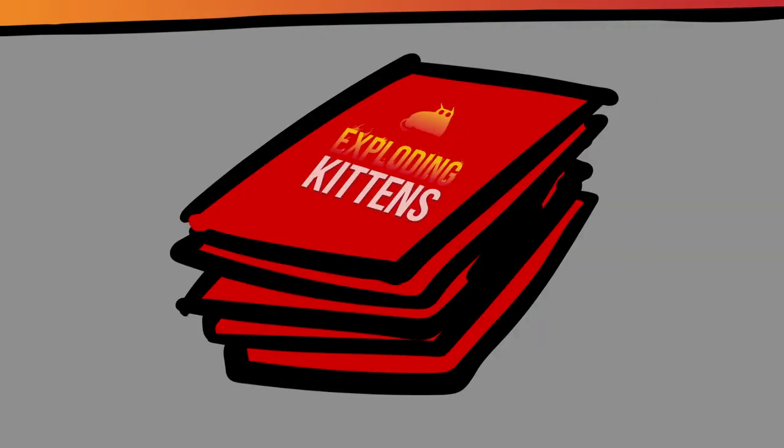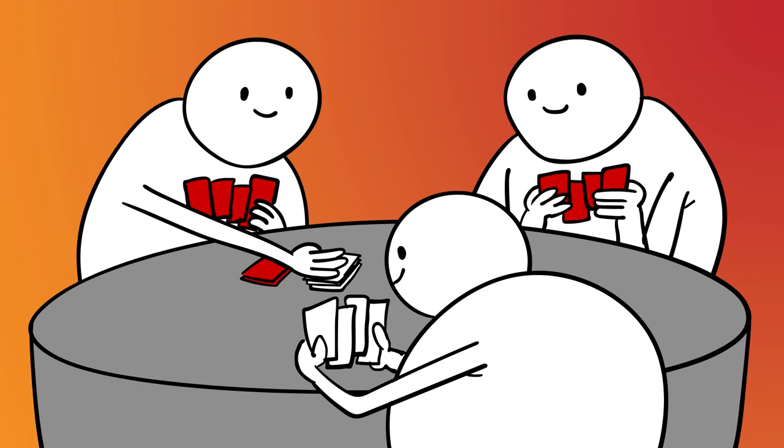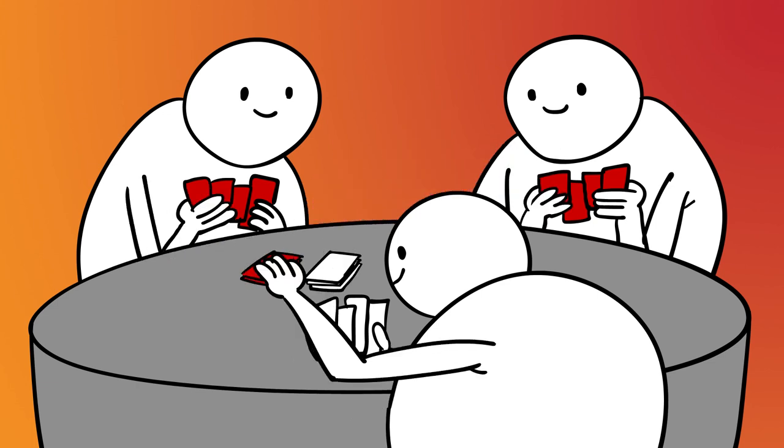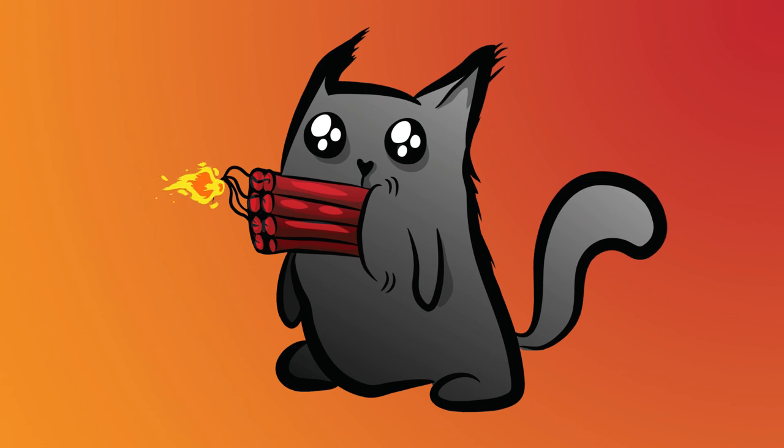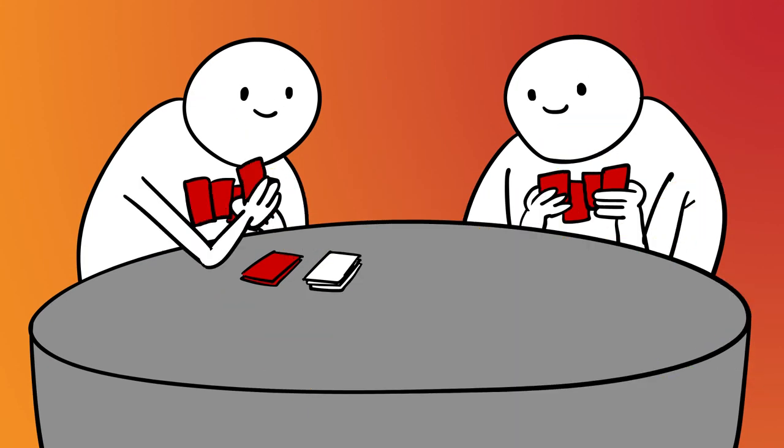To play this new version of the award-winning card game, set the deck of cards face down and take turns drawing until one of you draws an Exploding Kitten card. Whoever draws the Exploding Kitten card explodes. They are dead and they are out of the game.